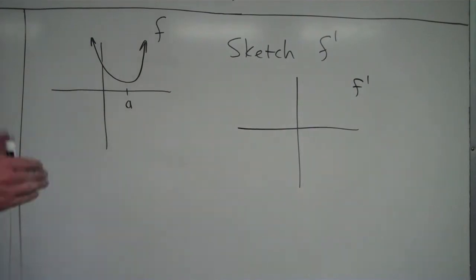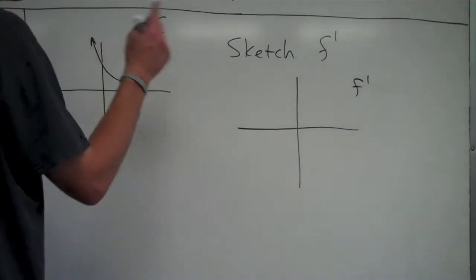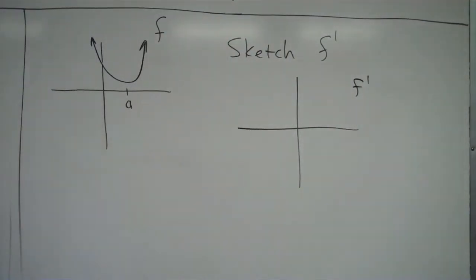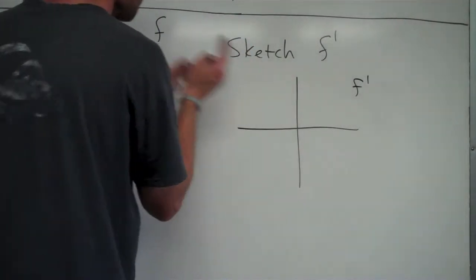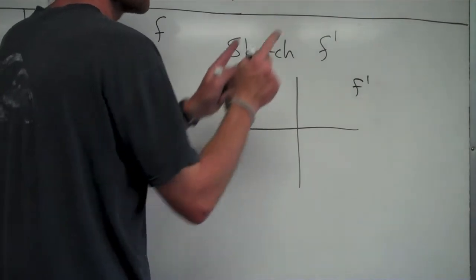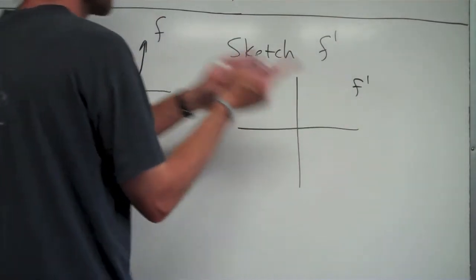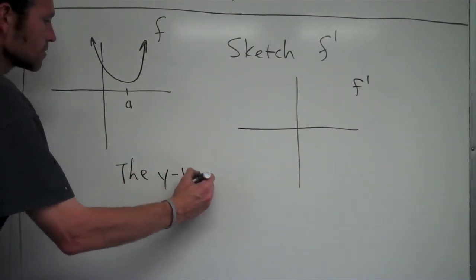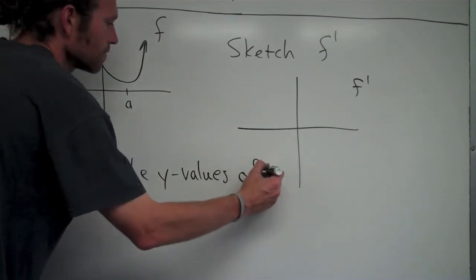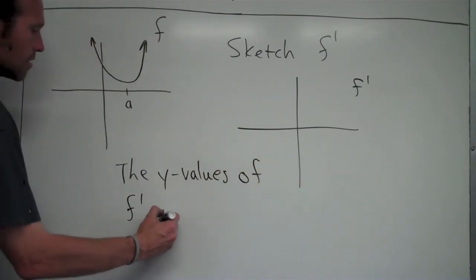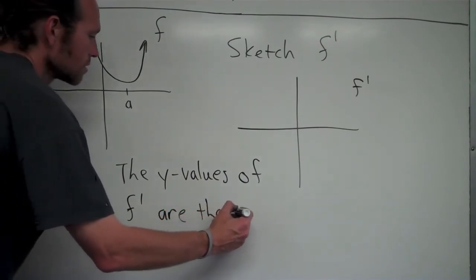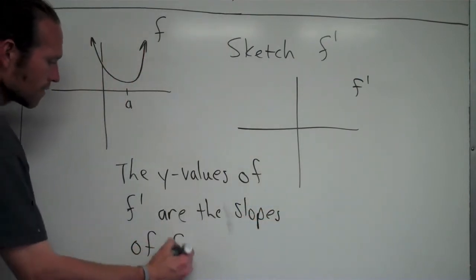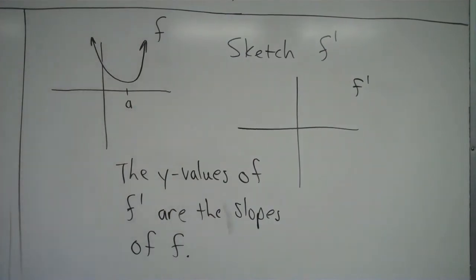What I have to keep in mind is that f prime is the derivative of f, which is another word for slope. So f prime is the slope of f — that is a key point. The y-values of f prime are the slopes of f. That's the constant thing we have to keep in mind here.